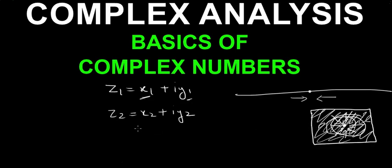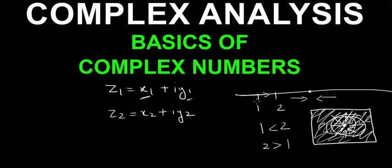In the real line, for example, if here is 1 and here is 2, you can say 1 is less than 2 because going in one direction you reach 1 first and 2 later, and going the other direction you reach 2 first and 1 later.